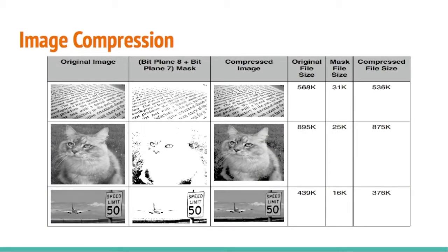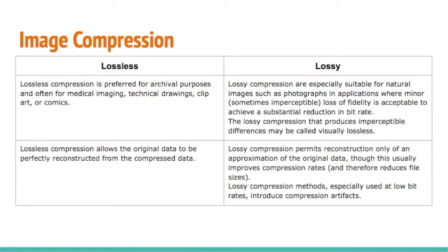Here is an example of image compression — we can see the differences in file size. For example, the first image's original file size is 568 kilobytes, and after compression it changed to 536 kilobytes. Lossless compression is preferred for official purposes and is often used for medical imaging. Lossless compression allows the original data to be perfectly reconstructed from the compressed data.